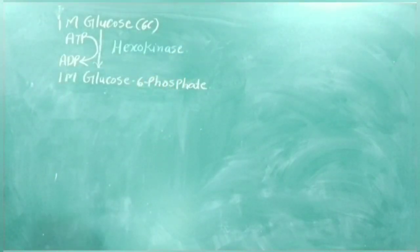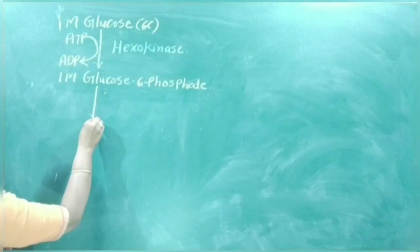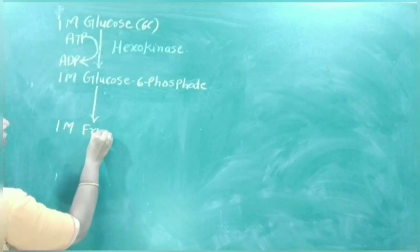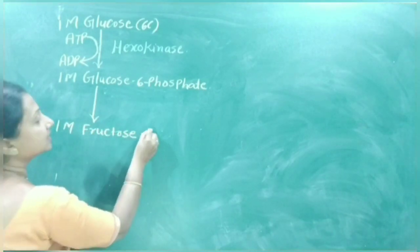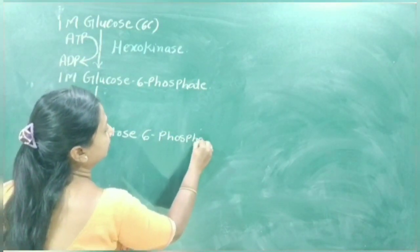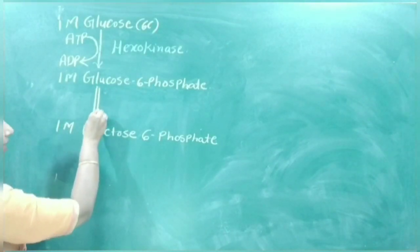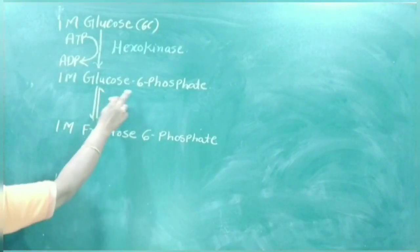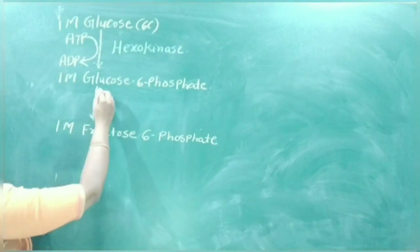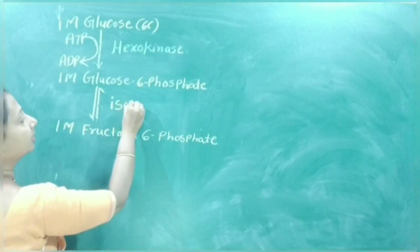Glucose-6-phosphate is then converted into fructose-6-phosphate. Fructose is the isomer of glucose-6-phosphate, so they are interconvertible. The enzyme that helps this conversion is isomerase.